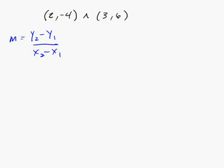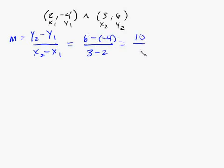We're going to go ahead and label these points x1, y1, x2, y2, and plug them in. So y2 is 6 minus y1 is negative 4, that's 6 minus negative 4, all over x2 minus x1, so that's 3 minus 2. 6 minus negative 4 is positive 10, and 3 minus 2 is just 1. So our slope is going to be m equals 10 over 1, or just m equals 10.